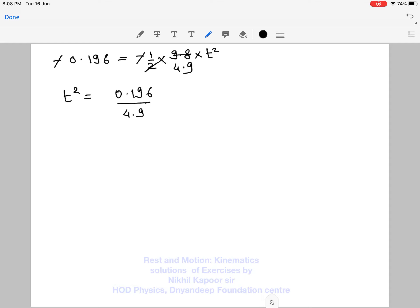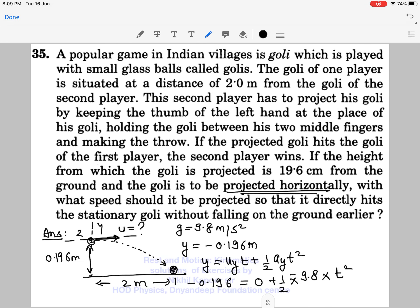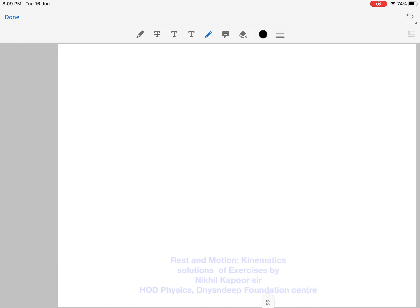So the time comes out to be... I can arrange it, I can write this as 1.96 and this as 49 by shifting the point. The root of 1.96 is 1.4 and 49 root is 7, so the time comes out to be 0.2 second.